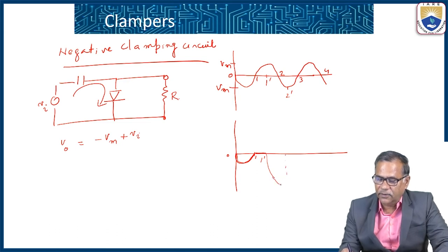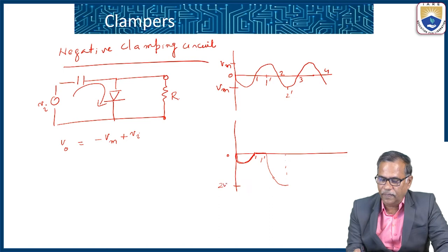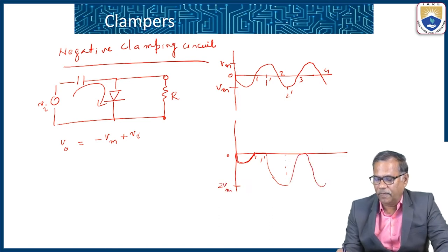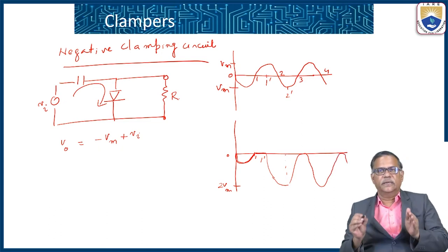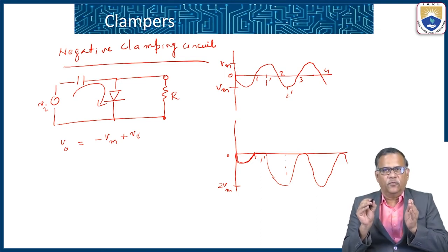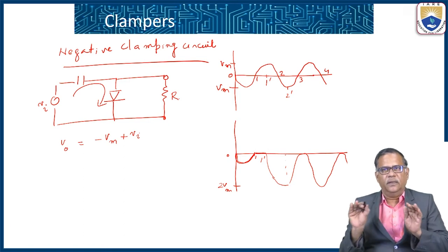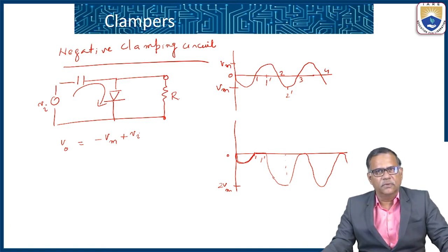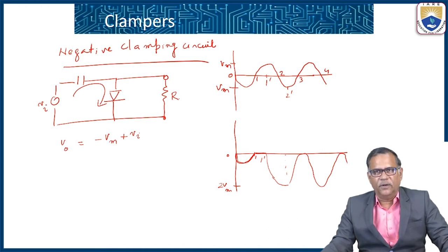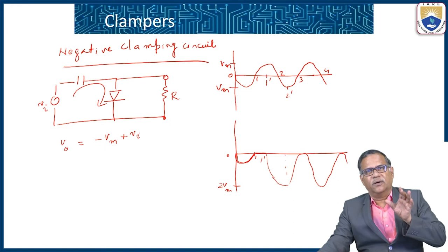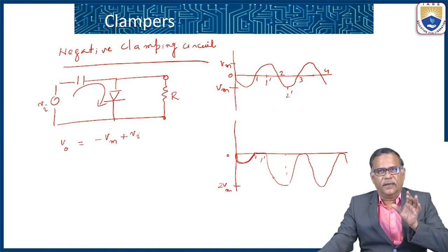At point 2-dash, V_i is minus Vm, so V0 equals minus Vm plus minus Vm, giving minus 2Vm. This process repeats. In steady state, the peak value of the output voltage is minus 2Vm, the signal is negatively clamped, and the DC average value is minus Vm. That is why it is called a negative clamping circuit.